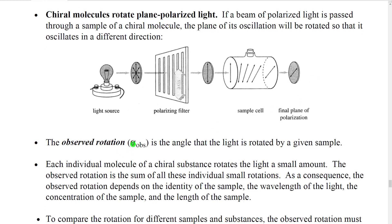The observed rotation is given the symbol alpha, and to indicate that it's observed rotation, we put this little subscript OBS, which stands for observed. Now, the observed rotation is not perfectly constant. It depends on many factors.